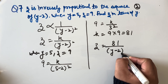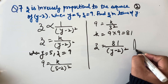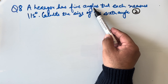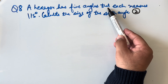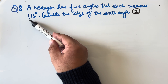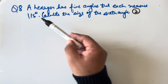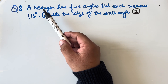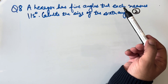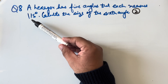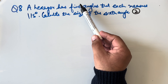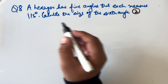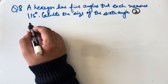Question 8: a hexagon has 5 angles that each measure 115°. Calculate the size of the 6th angle. We know a hexagon has 6 angles; 5 are given as 115°, and we need to find the 6th. The sum of interior angles of a polygon is given by (n − 2) × 180°.